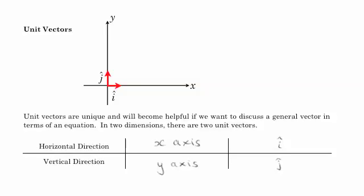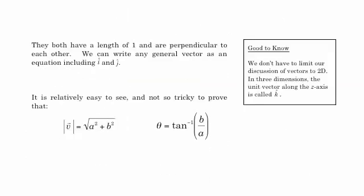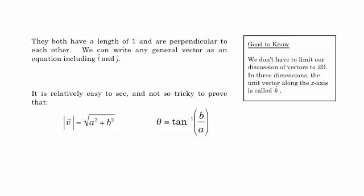Because we can use these two vectors now. And we can write any vector in 2-space or in 3-space as what they call a linear combination of these i-hats and j-hats. Now, what is a linear combination? It basically just means that we can write any general vector as an equation and include i-hat and j-hat.